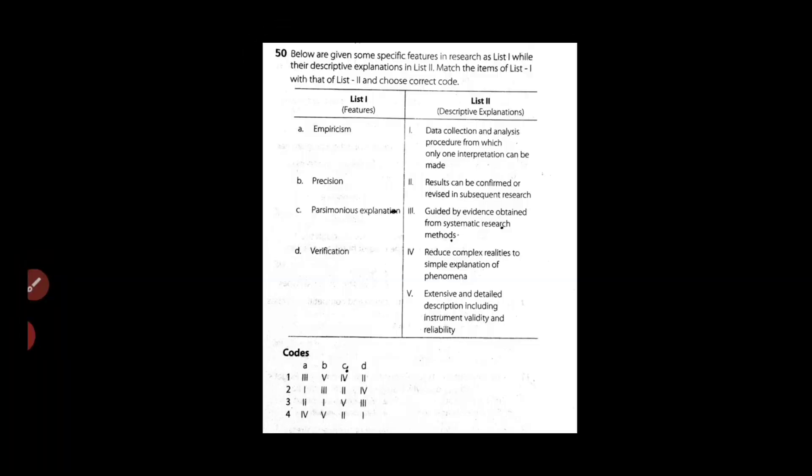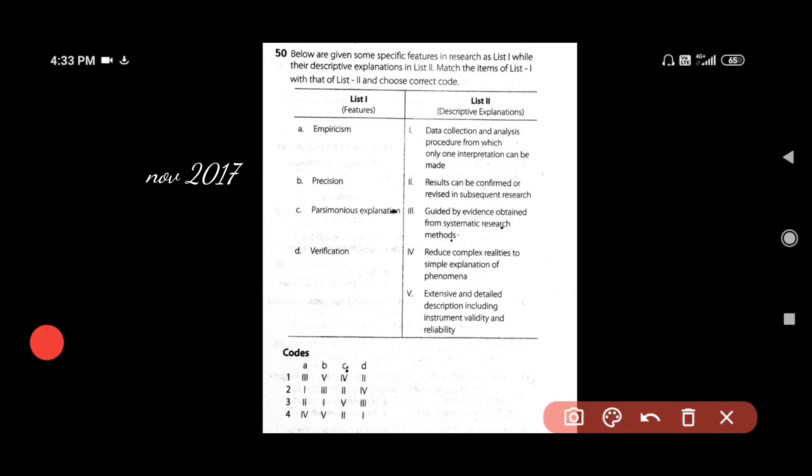So we have a previous year question. Match the following. The features with their respective descriptive explanations. So we'll start off with precision, which we have just learned now. Precision. Extensive and detailed description, including instrument, validity, and reliability. So the key word to note here is extensive and detailed description.